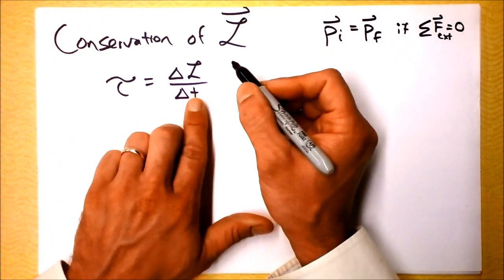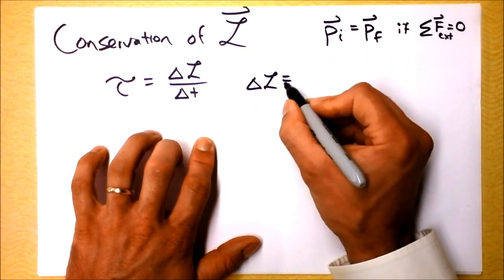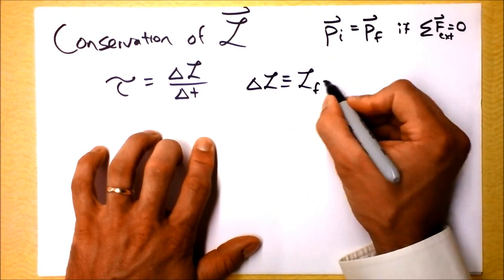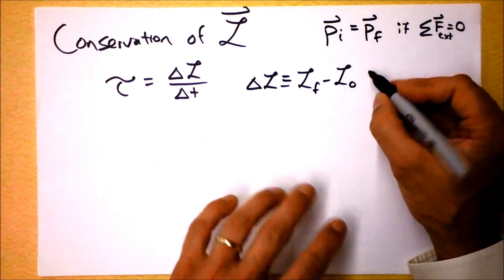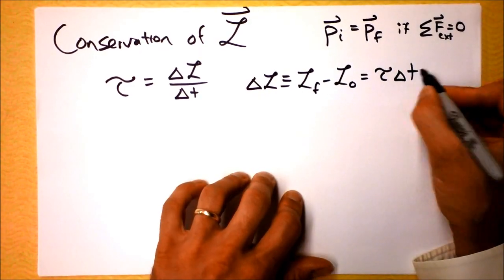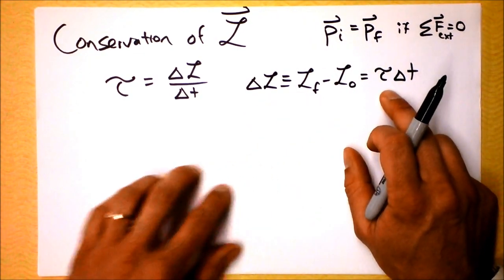but it's pretty solid. We need to write that delta L, therefore, I mean, that's the definition, it's L final minus the initial L, and that's equal to torque times time. So that's how you change angular momentum, you get a torque acting over some time.